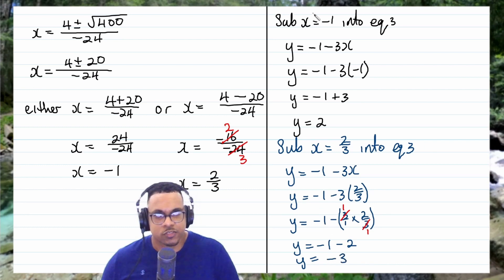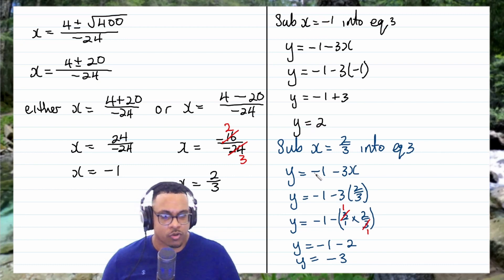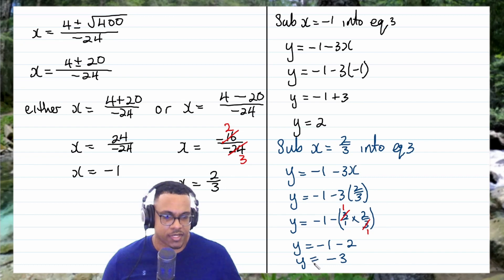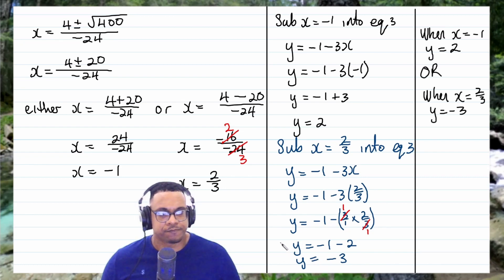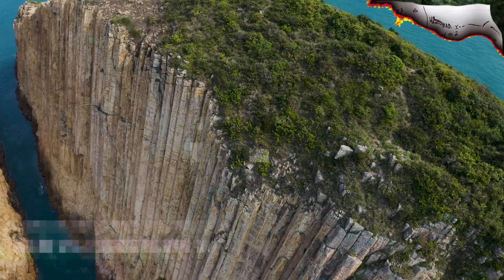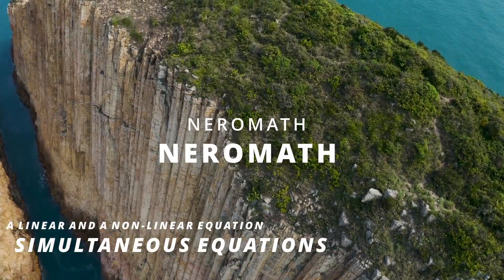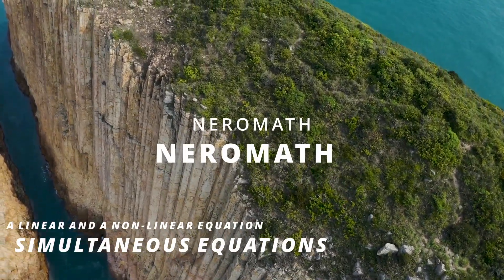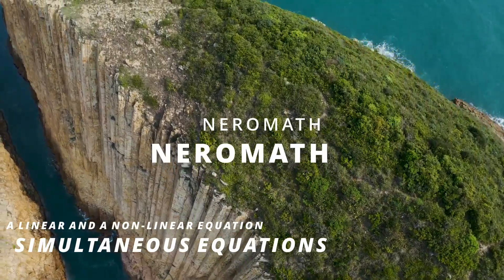So our answers are: when x equals negative 1, y equals 2; or when x equals 2 thirds, y equals negative 3. We'll see you next time.